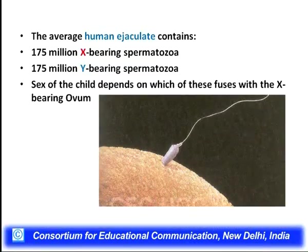Thinking about the colossal numbers involved: an average human ejaculate contains a staggering 175 million X-bearing spermatozoa and an equal number — 175 million — of Y-bearing spermatozoa.